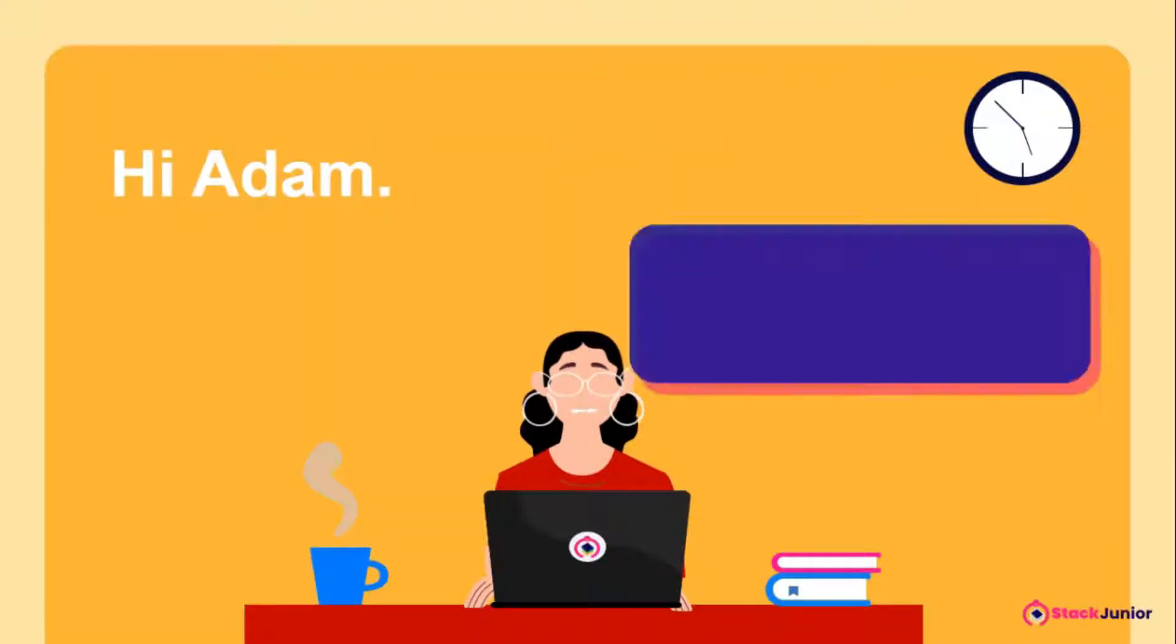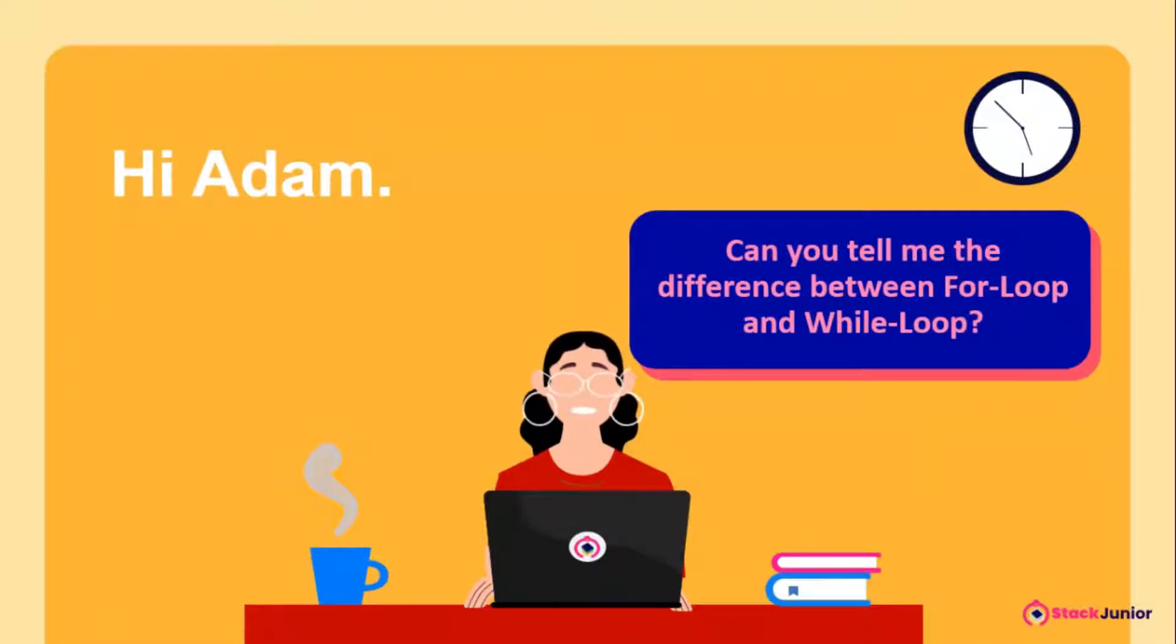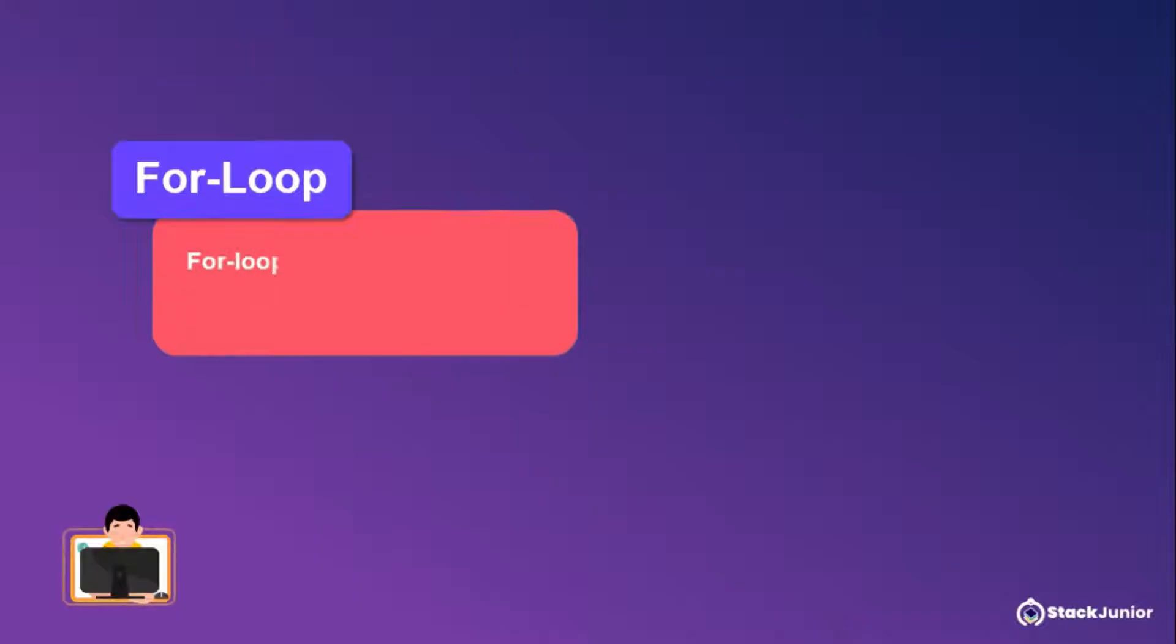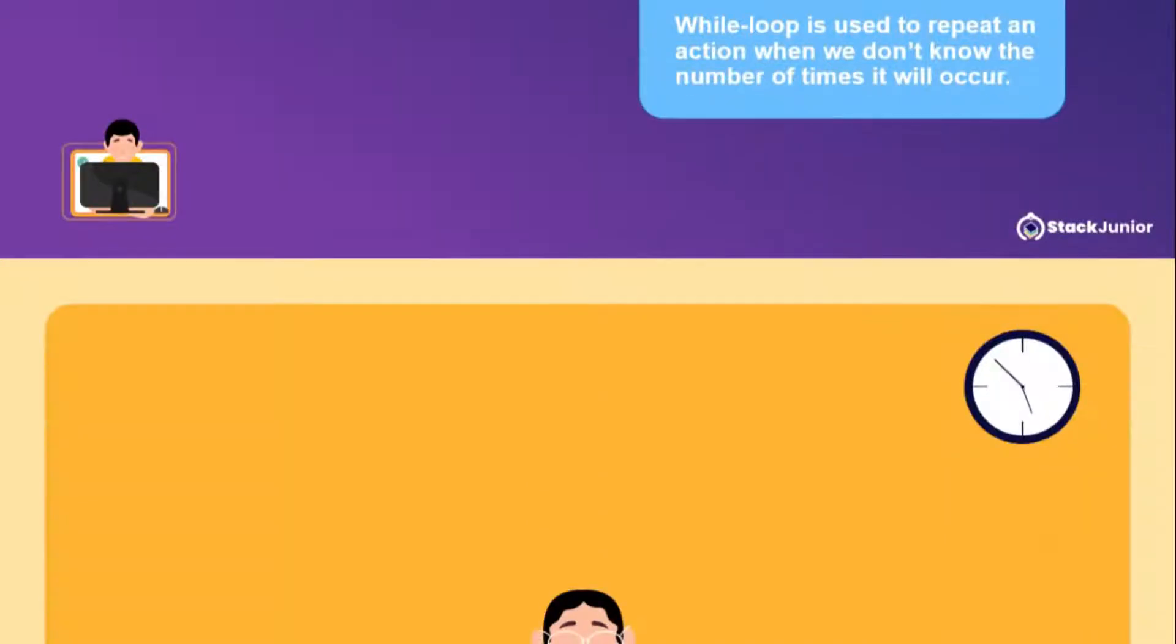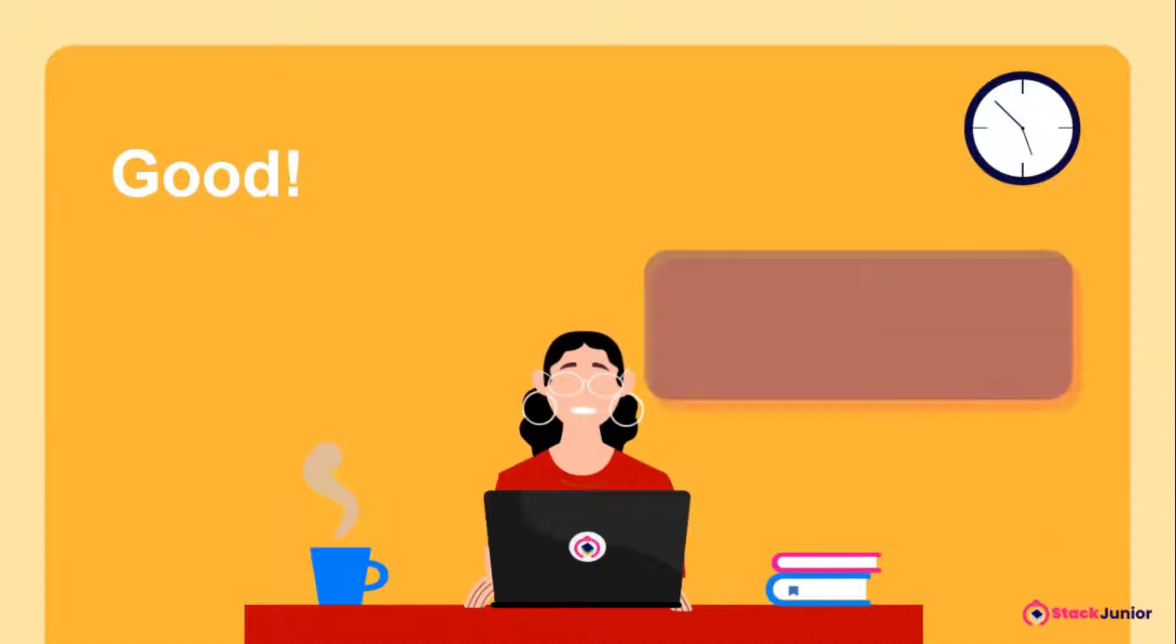Hi Adam, can you tell me the difference between for loop and while loop? We use for loop to repeat an action which we know the number of times it will occur, while the while loop is used to repeat an action we don't know the number of times it will occur. Good, let us use these two examples to describe for loop and while loop respectively.